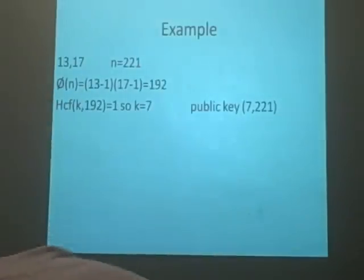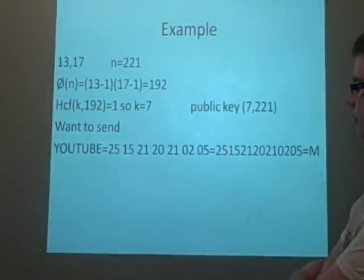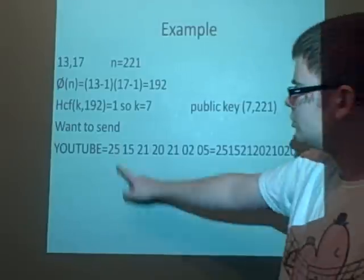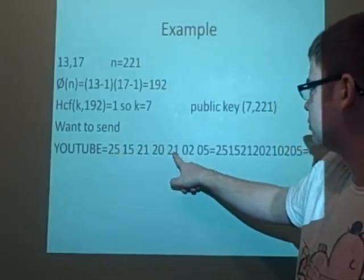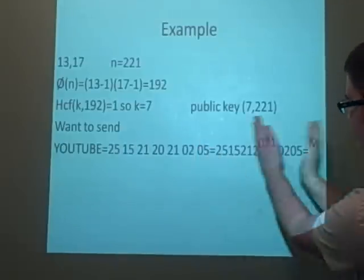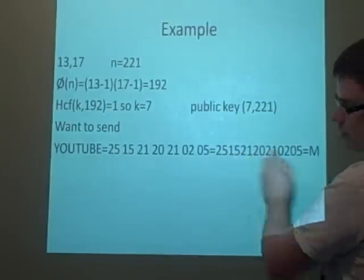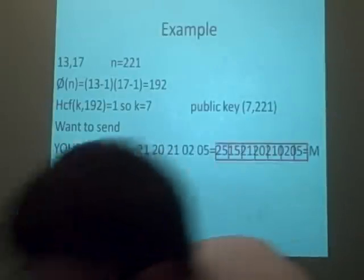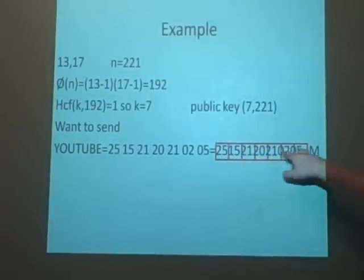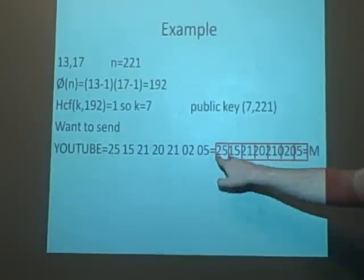Now if you're at the other end, say you want to encode the message YouTube, which we've done in the digital alphabet as 25, 15, 21, 20, 21, 02, 05. You put them together, and this gives you your value m. This is our value m, but this m is much greater than our n, which is 221. So because that's 3 digits, we'll split them up into 2 digits. We'll split that up into 2 digit parts, and sometimes if you've got a 4, they just split up to 3 digits.